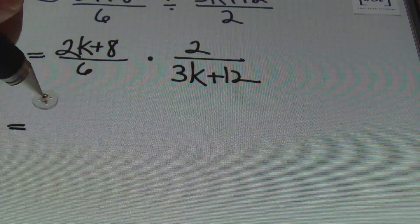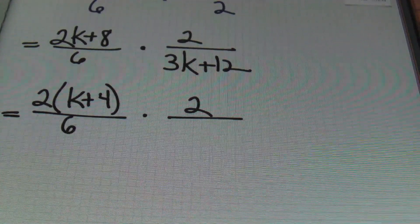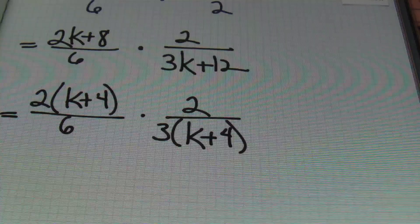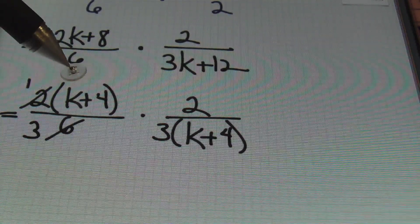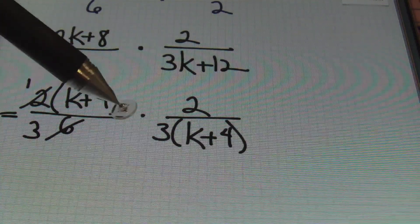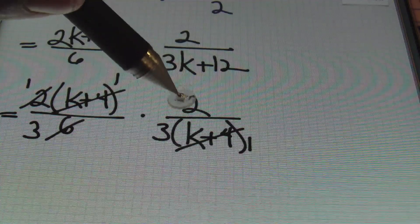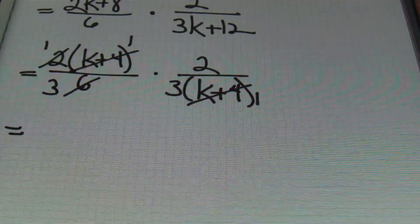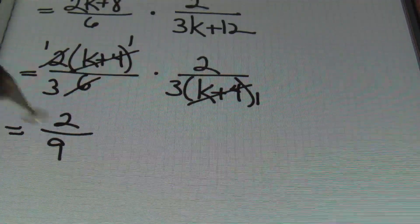In the numerator I can factor out a 2, so I can rewrite this as 2 times k plus 4 over 6, times 2 over — in the denominator of the second fraction we can factor out a 3, leaving k plus 4 as well. Simplifying before I multiply: 2 goes into itself once and into 6 three times. I also recognize that k plus 4 appears in the numerator and in one of the denominators — as long as you have a common factor in one of the numerators and one of the denominators, you can simplify to 1. So k plus 4 cancels out in both positions. Multiplying straight across, I end up with 2 in the numerator, and 3 times 3 is 9 in the denominator. My answer is 2 ninths.